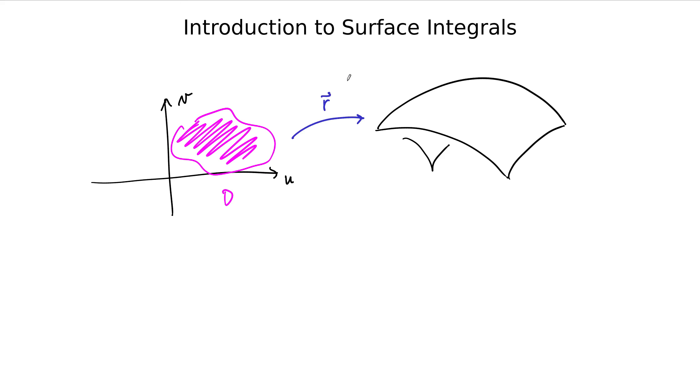This is the domain space in the parameter domain. And then we have a vector function R which maps the points in the parameter domain to the surface over here. And so this surface is given by the graph of R of U, V.